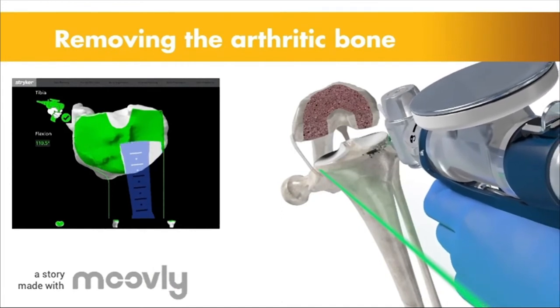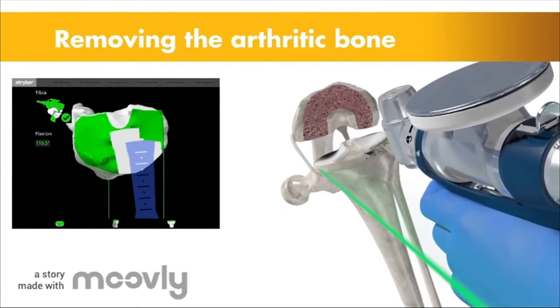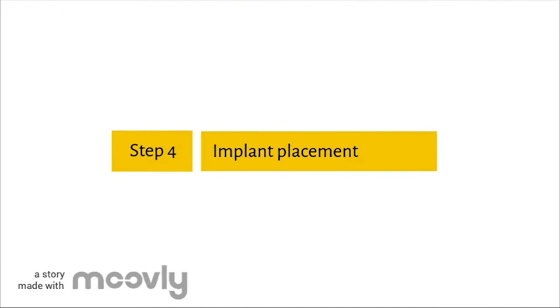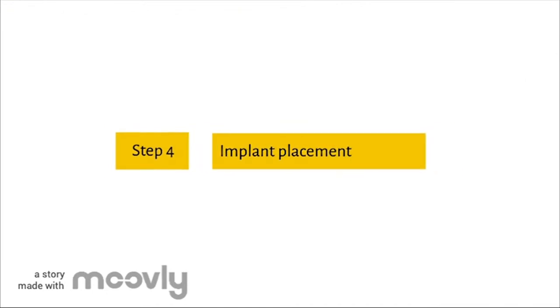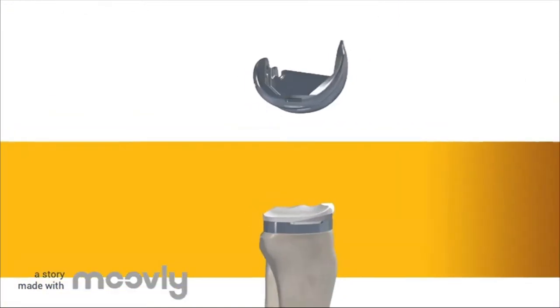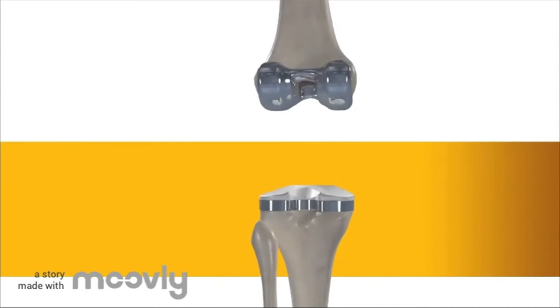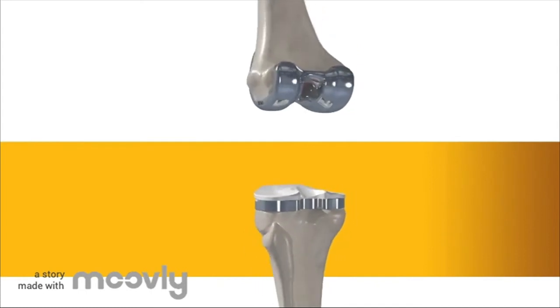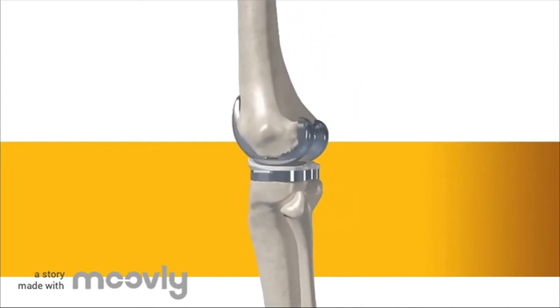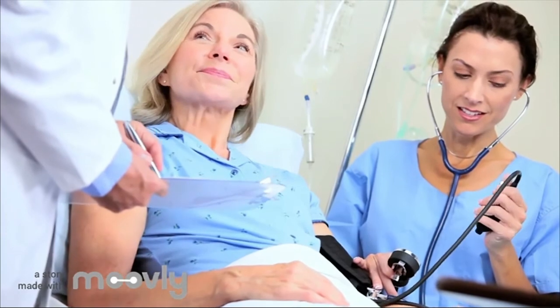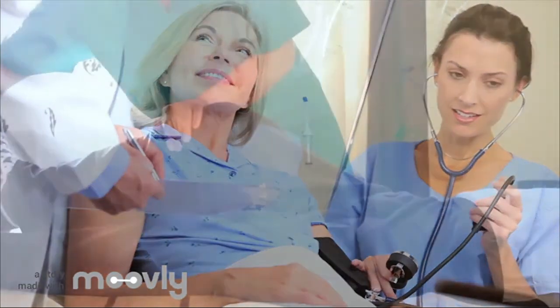The final step is implant placement, where the implant goes into the joint after the diseased bone has been removed. After this, the surgical procedure is complete, but the patient must go into the recovery room to strengthen the new joint.